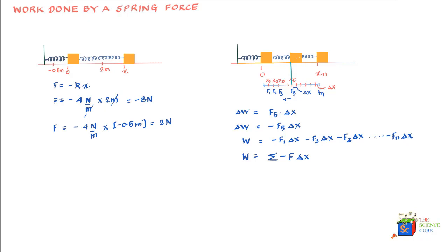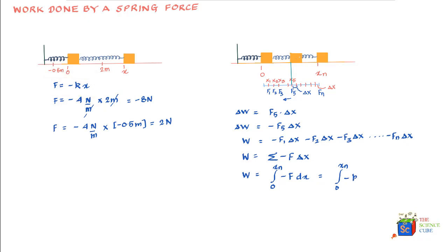Using integral calculus, as the limit of delta x tends to 0, this converts to: work done = ∫₀^{x_n} (-F) dx. Since F = kx as per Hooke's Law, and we've already accounted for the sign, this becomes the integral of -kx dx from 0 to x_n, which equals -½kx_n². Or more generally, the work done by the spring force when displacement is x is equal to -½kx².